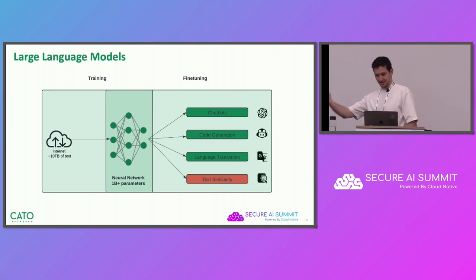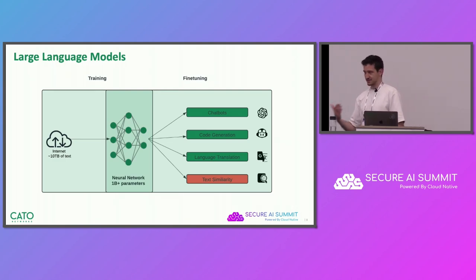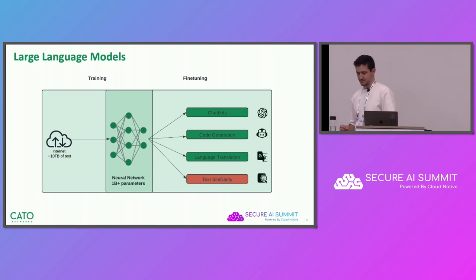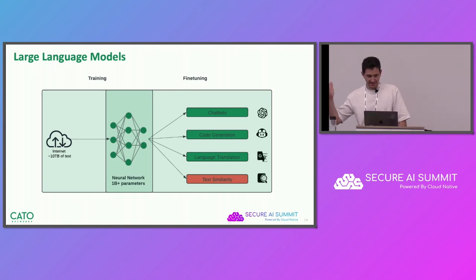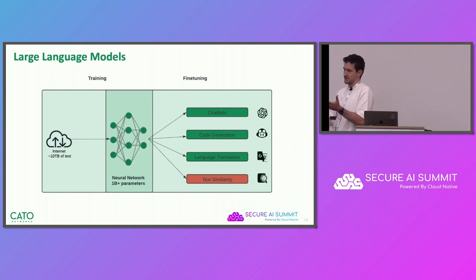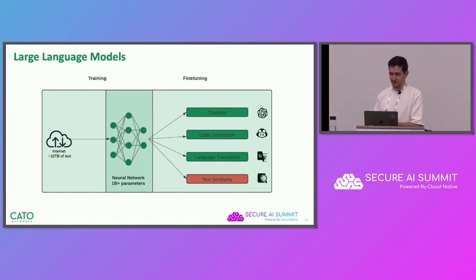A language model is a neural network that has been trained on gigantic corpuses of text, typically more than 10 terabytes of text. The training is done in two phases. First, we have the basic training to create a foundation model — this is the most expensive and resourceful part of the training. Very few companies do this today, really only the tech giants. The second phase is taking a generic foundation model that knows language and essentially just completes text, and making it specialized on a specific task — something much more affordable that most companies today can do.